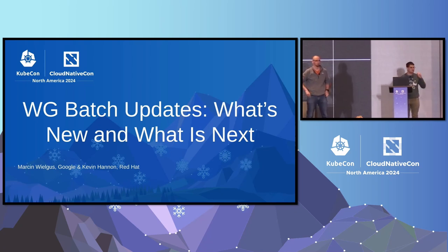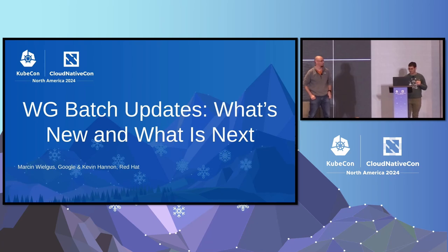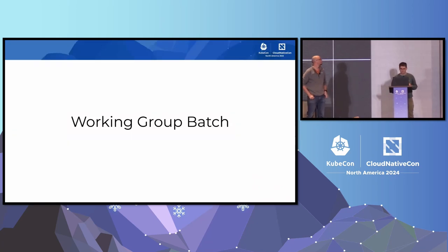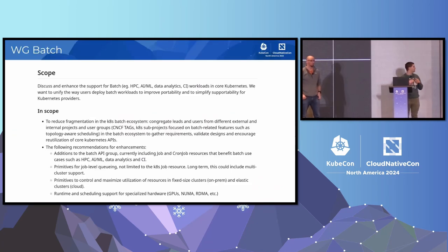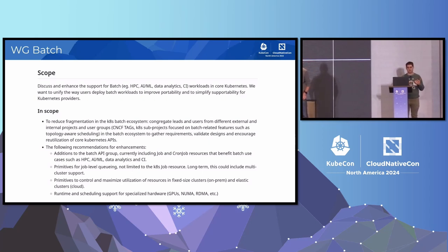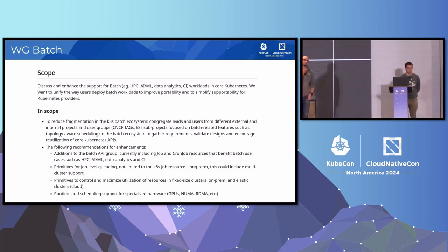Can I get a show of hands - who here knows what a working group is in Kubernetes? So as we all know, Kubernetes has these things called special interest groups. These are essentially the people that own a lot of the code in Kubernetes. What's important for batch is SIG node, SIG apps, SIG auto scaling, and SIG scheduling. Generally, it's kind of difficult to get features into Kubernetes because sometimes these groups are a little bit siloed.